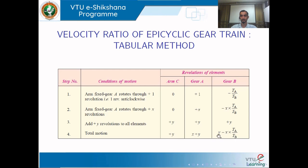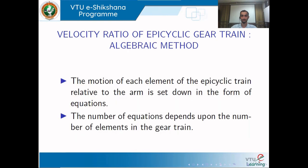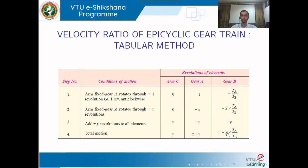The total motion of the arm is y, the total motion of gear A is x + y, and the total motion of gear B is y minus x times TA by TB. To solve for the velocity ratio of an epicyclic gear train, one or two conditions will be specified. Using those conditions, you can find the velocity of each element. This is the tabular method for finding the velocity ratio of an epicyclic gear train.